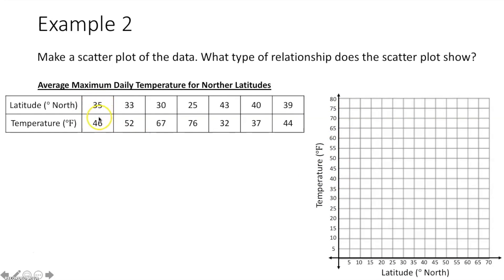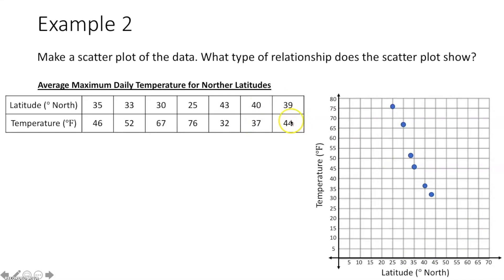We continue plotting: 25, 76 — over 25, up 76; 43, 32 — over 43, up 32; 40, 37 — over 40, up 37; 39, 44 — over 39, up 44. Now we've graphed all of the points from our table.